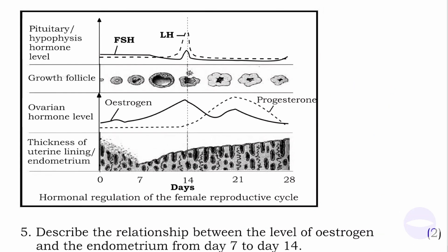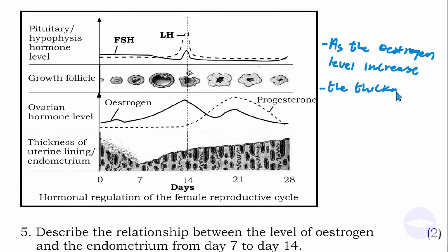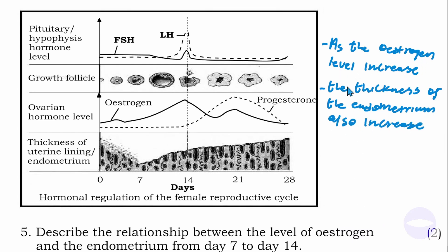Question number five: describe the relationship between the level of estrogen and the endometrium from day seven to day fourteen. Estrogen is secreted by the follicles. From day seven, as the follicles are growing, estrogen is increasing, and the thickness of the endometrium is also increasing. You can write: as the estrogen level increases, the thickness of the endometrium also increases.